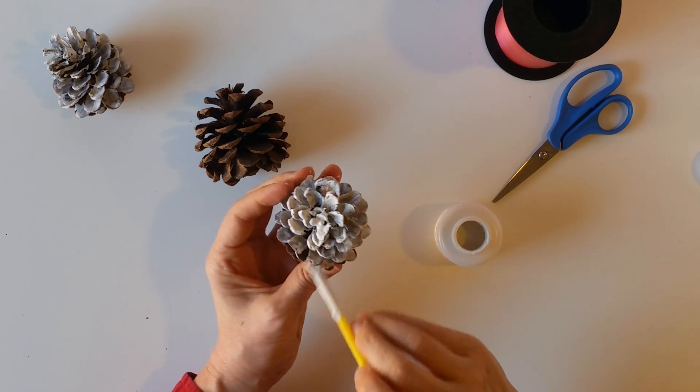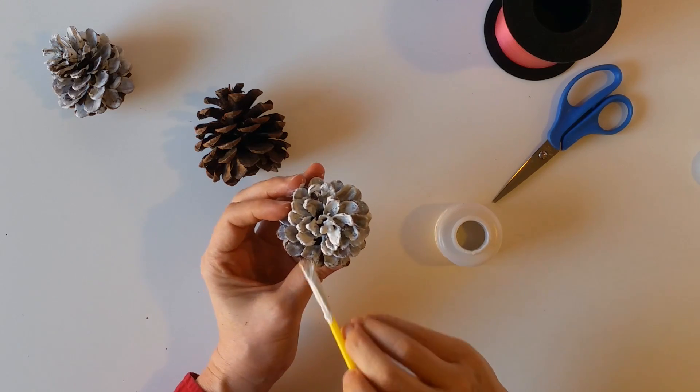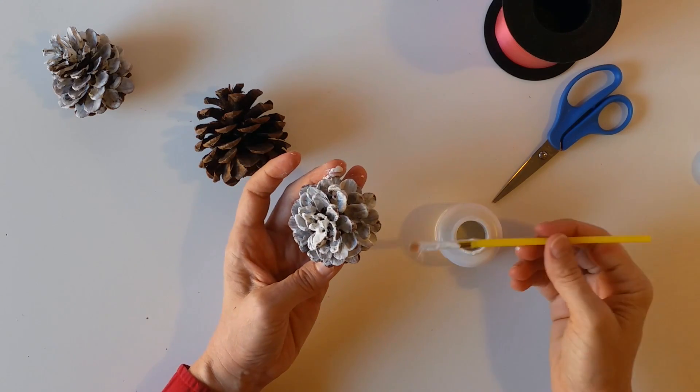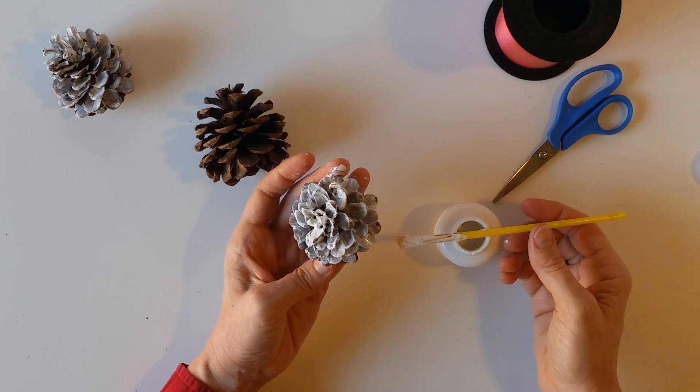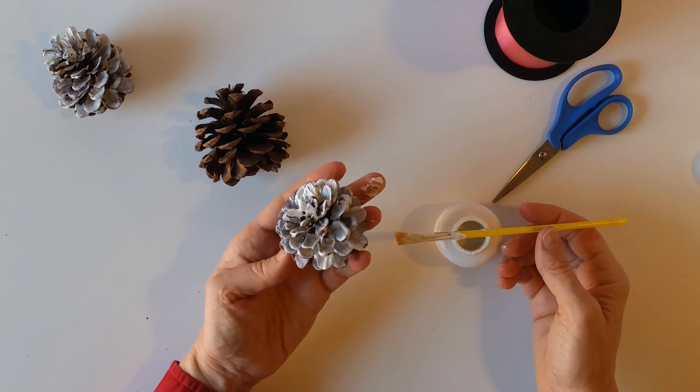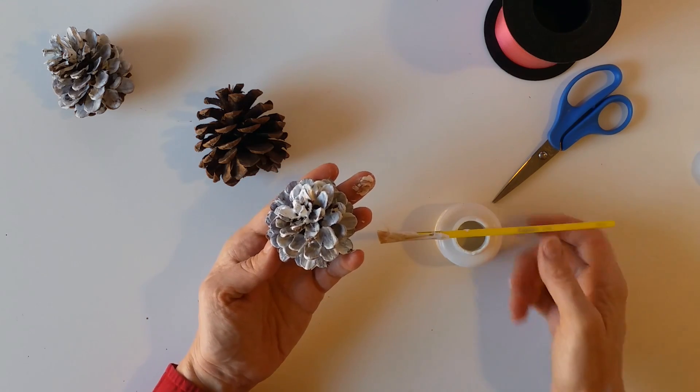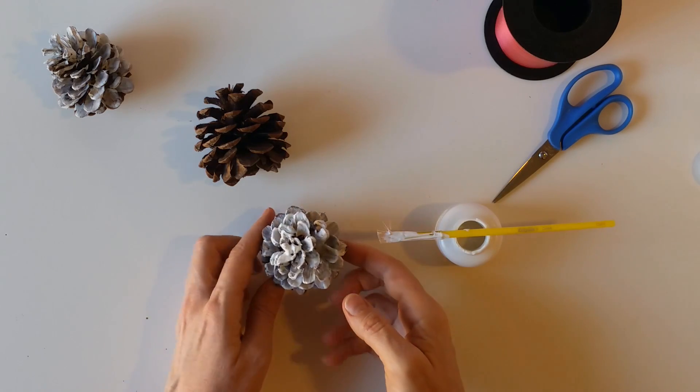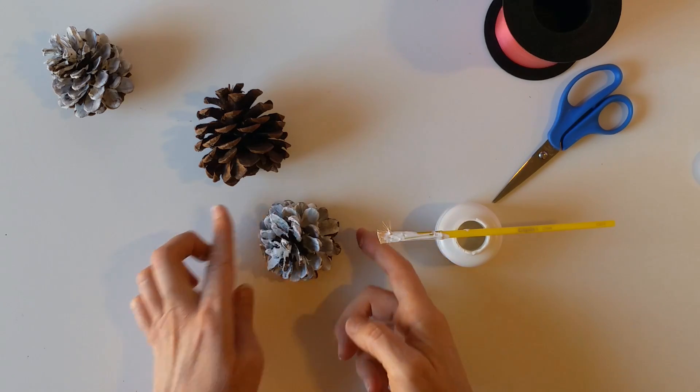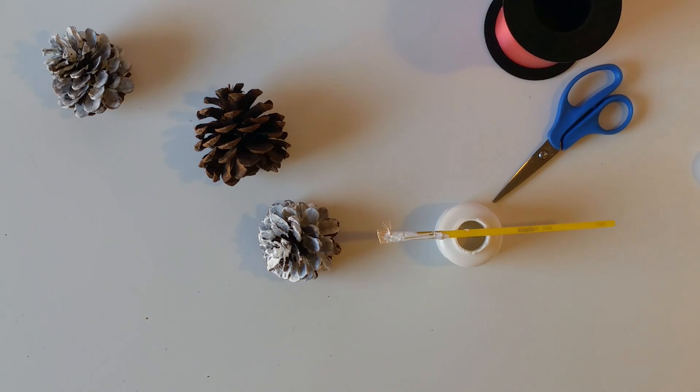So I'm almost done. Just finishing up around the bottom. Like I said you probably want to let it sit and dry for half an hour to an hour depending on how much paint you put on it. So let's set it down. Wipe off my hands. And then we're going to put the ribbon on the one I dried.